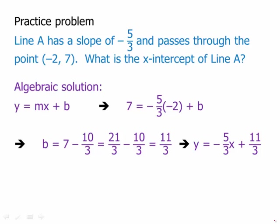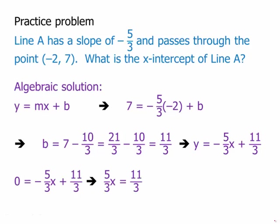Now, what we need to find is the x-intercept. The way we find the x-intercept of a line is to set y equal to zero and solve for x. Multiply by three, and we get an x-intercept of eleven-fifths, or 2.2 as a decimal. That is a completely algebraic way to solve the problem, and that's a perfectly correct way to solve the problem.